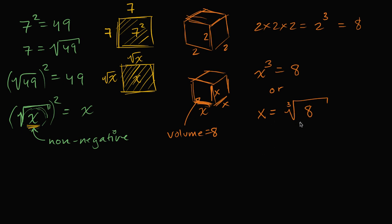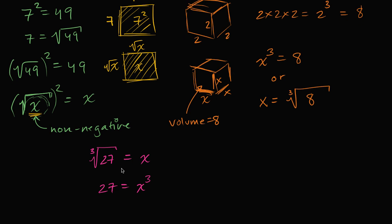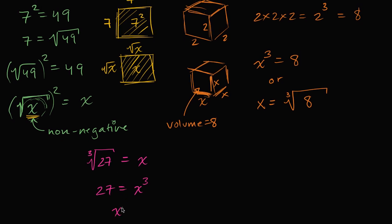Let's do some examples. What is the cube root of 27? If this equals x, that's the same as saying x to the third power equals 27. What is x? Well, x times x times x equals 27 — the number I can think of is three. So x is equal to three.